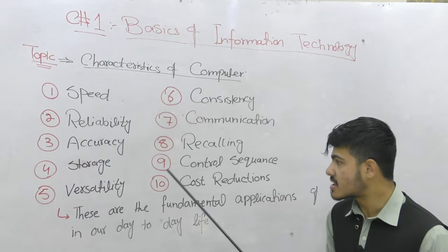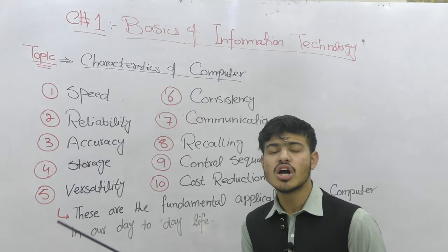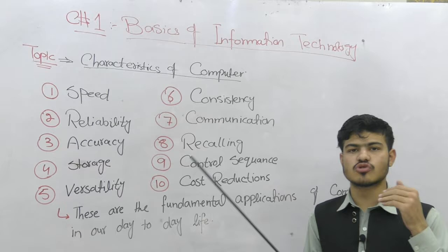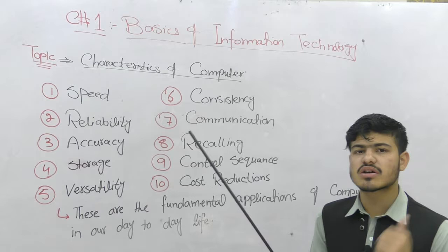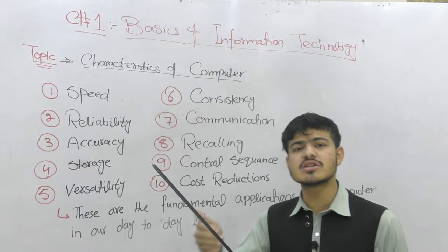Ninth characteristic is control sequence. Computer performs work in a specific sequence. When you input data into the computer, it processes in a specific sequence, and then the result is displayed on the screen as output. The computer processes everything in a specific sequence.